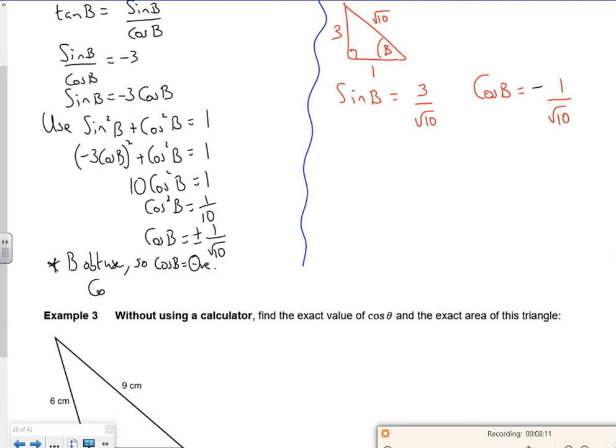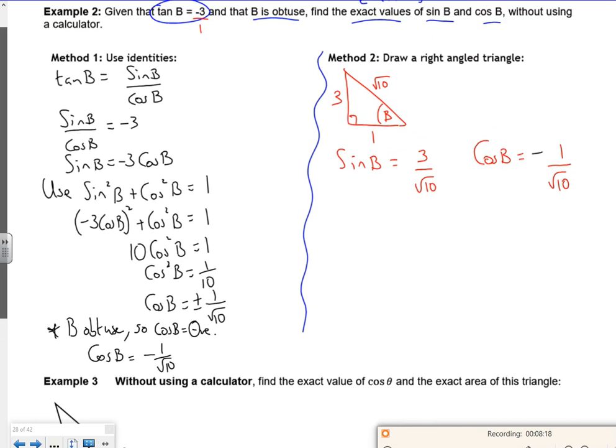Because I know that tan—here we go, sorry—because I've got this sine B is minus 3 cos B, then sine B is minus 3 times by minus 1 over root 10.